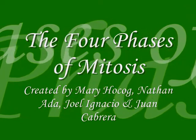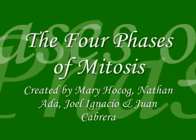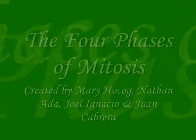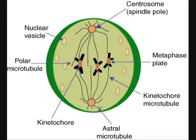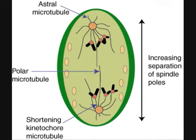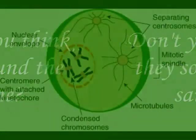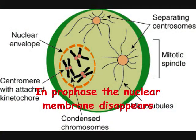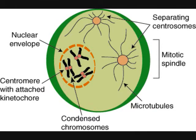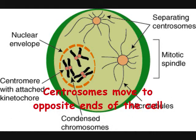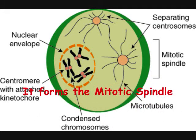There are four phases of mitosis and these are the names: Prophase, metaphase, anaphase, telophase — don't you think they sound the same? In prophase, the nuclear membrane disappears. Centrosomes move to opposite ends of the cell and it forms a mitotic spindle.